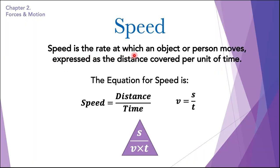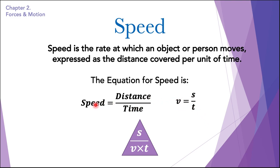Speed is the rate at which an object or person moves, expressed as the distance covered per unit of time. The equation for speed is: speed is equal to distance upon time, and in symbols we write it as V = S/T. S represents distance, T represents time, and V represents speed.